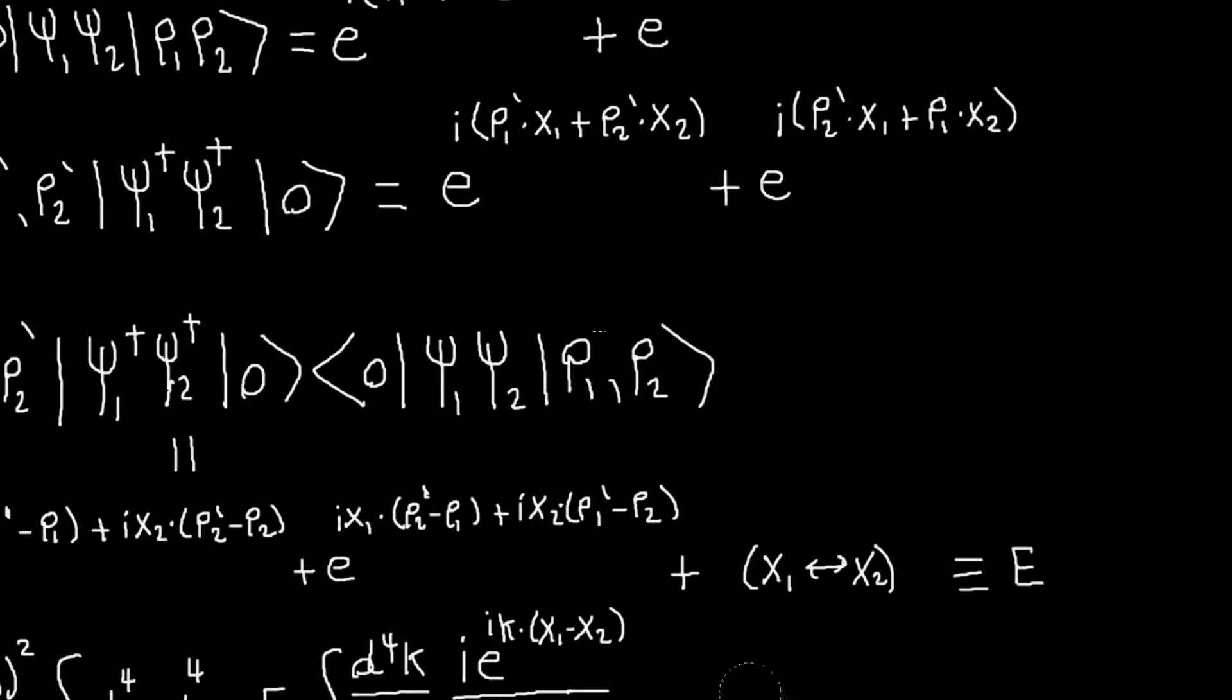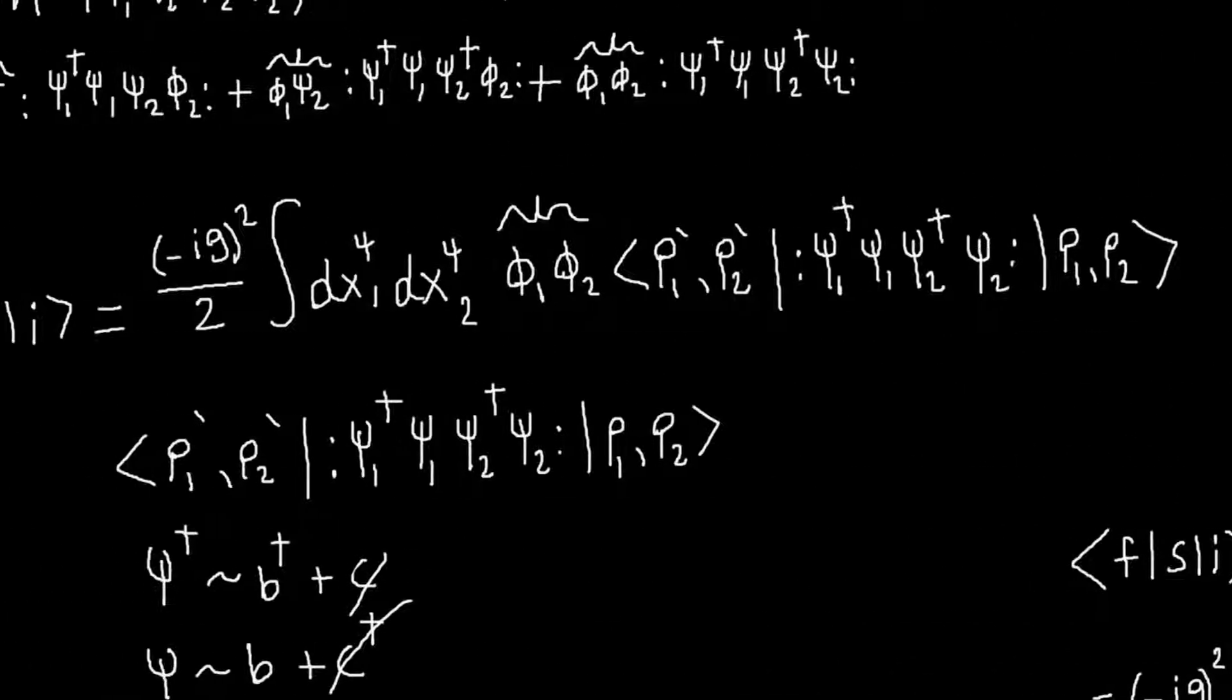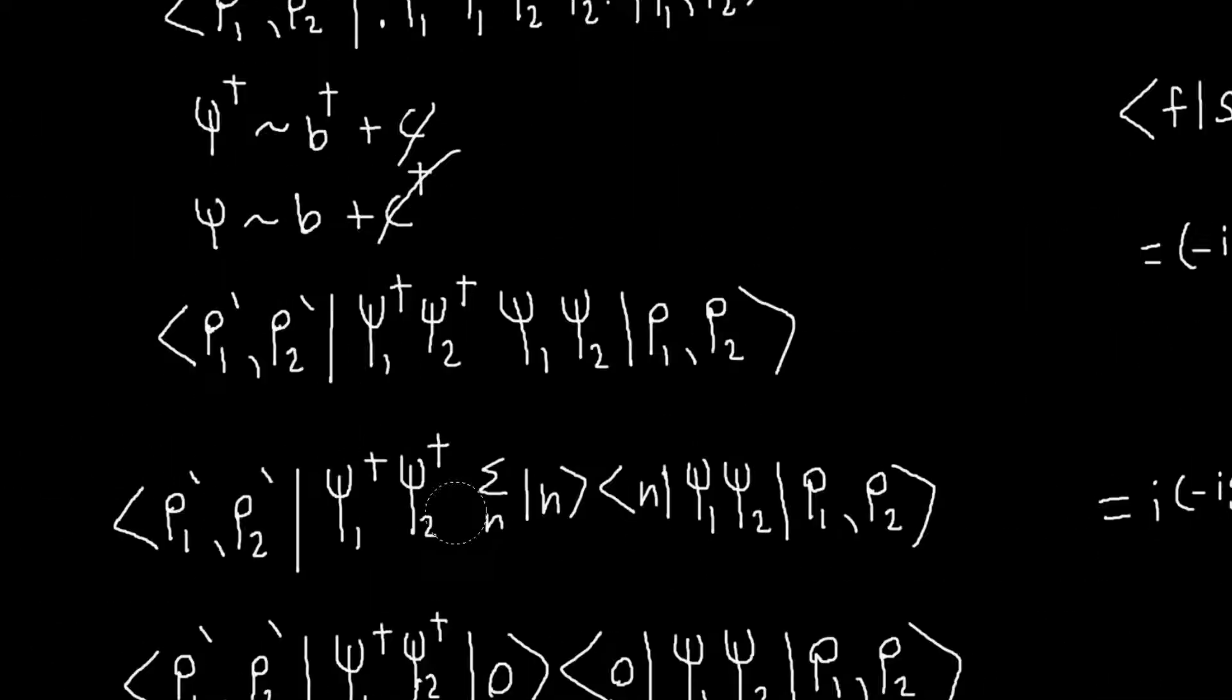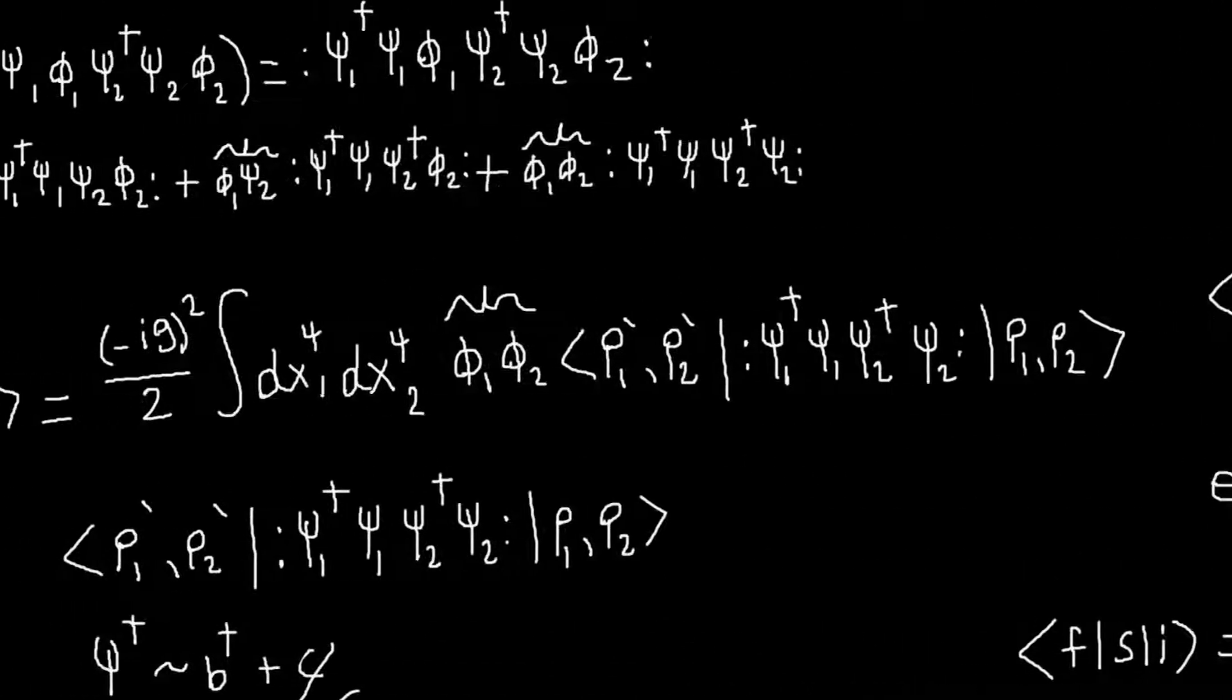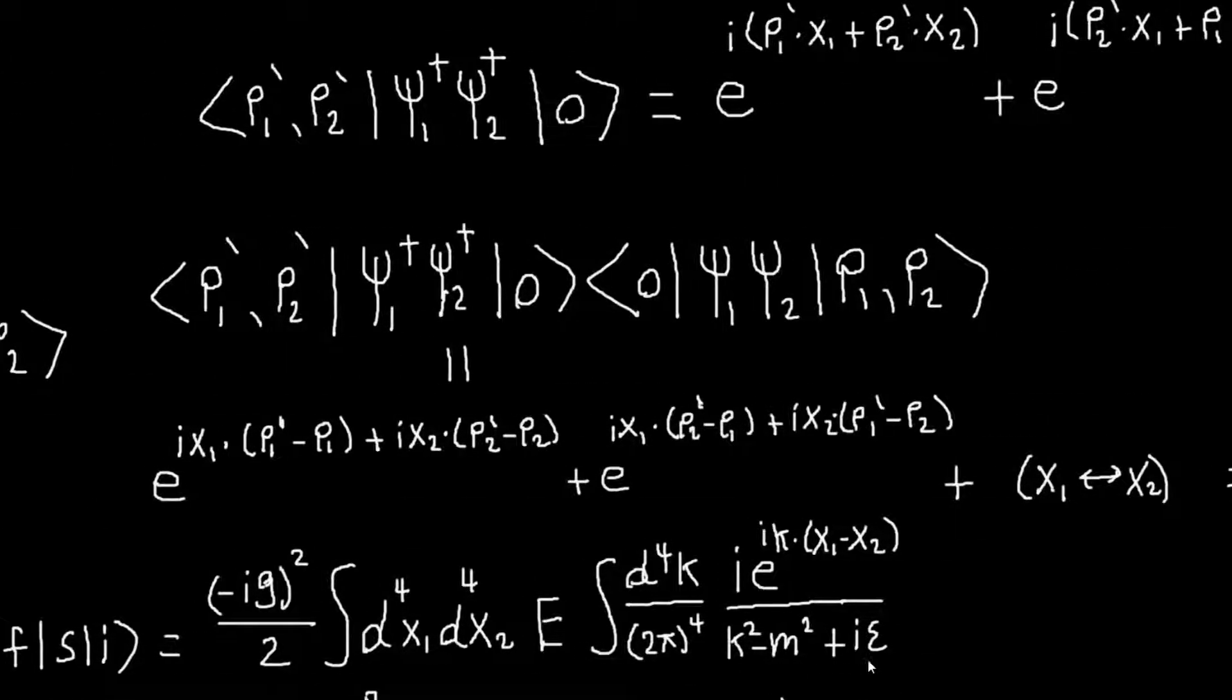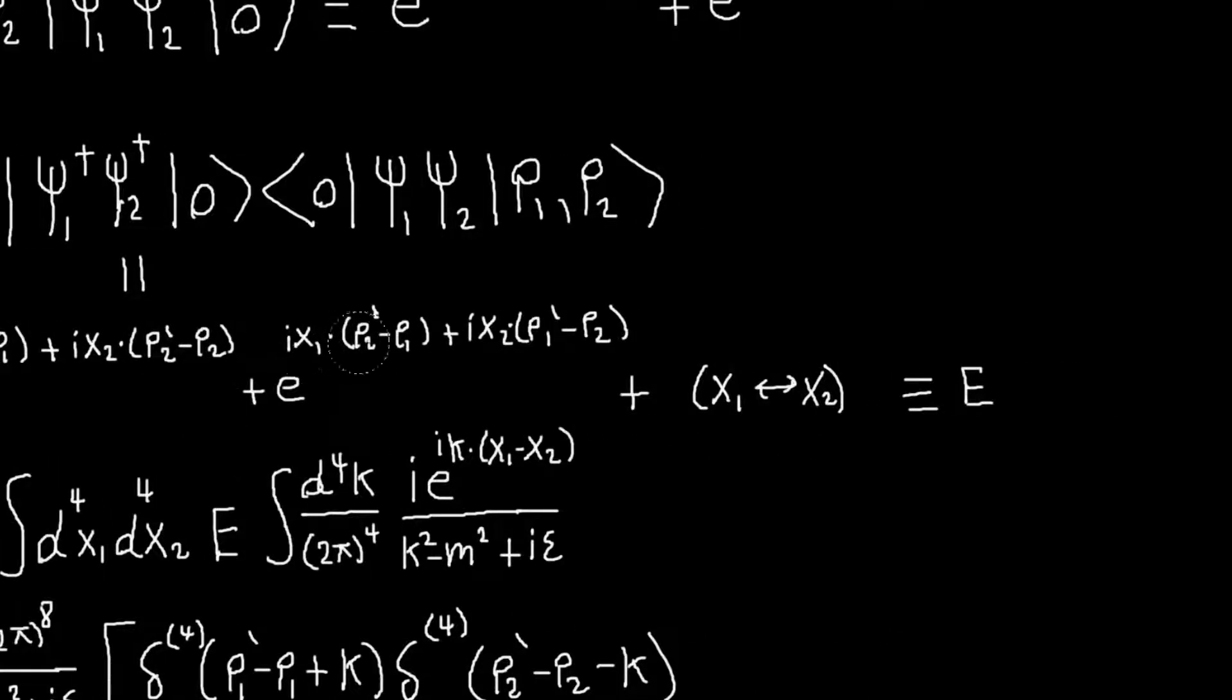And if I call that e, then just to remind yourselves what we're doing, we're calculating this thing, so we found that this can be written in terms of this product, and we just evaluated what this product is, so we're going to plug that product in here. And if we do that, and also write out this contraction as our Feynman propagator, then we get this thing. So I've called this expression e, so that's here.